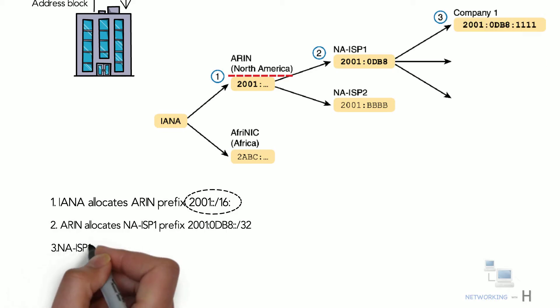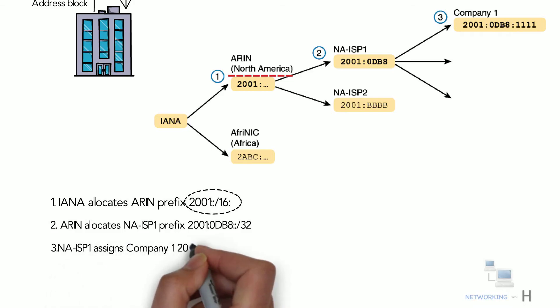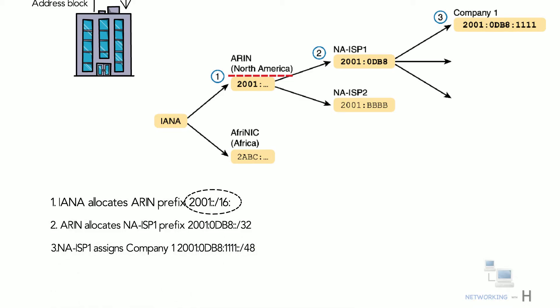Step 3: North American ISP1 assigns Company 1 the prefix 2001:0db8:41::/48. Company 1 decides to support IPv6 and goes to its ISP, North American ISP1, to request a block of global unicast addresses. ISP1 assigns Company 1 a small piece of its address block — specifically the addresses beginning with 48 bits (12 hex digits) of 2001:0db8:0041::/48.